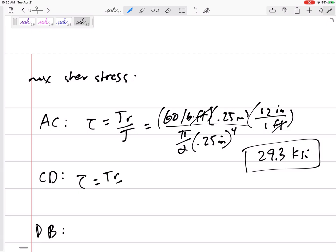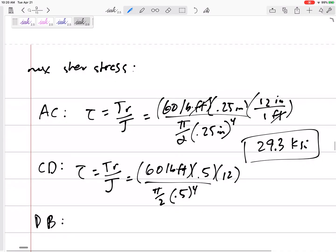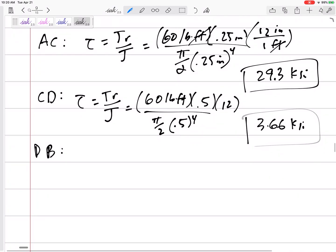In section CD, TR over J, the T is still 60 pound feet, but the R is 0.5, pi by 2, 0.5 to the fourth, multiplied times 12 because that's my unit conversion. This would be 3.66 ksi. That's the maximum shear stress on the outer edge. I shouldn't be boxing these in because I think it's only asking for one maximum shear stress anywhere. But anyway, that's the maximum shear stress inside section CD.